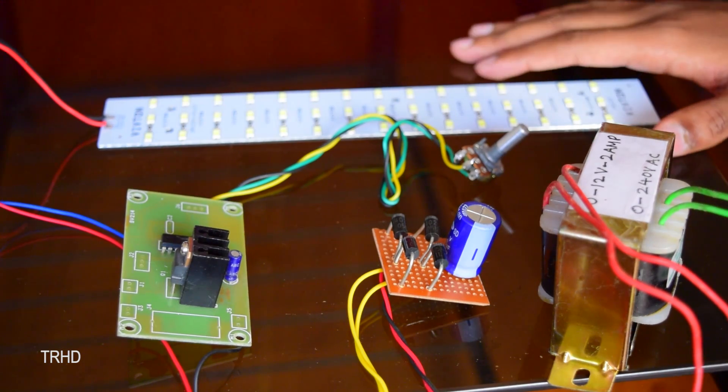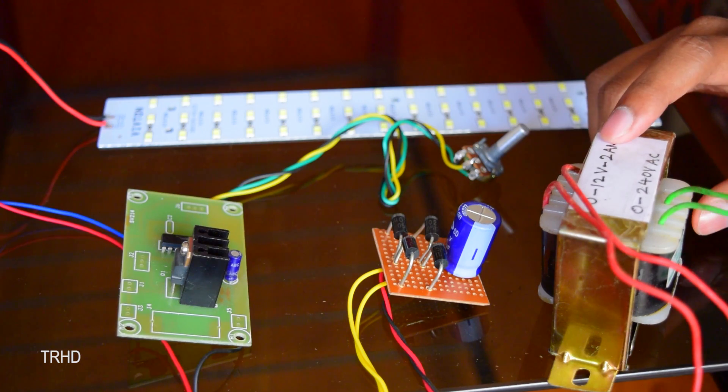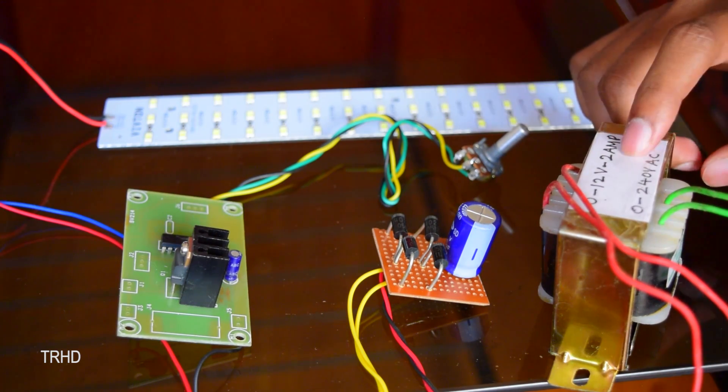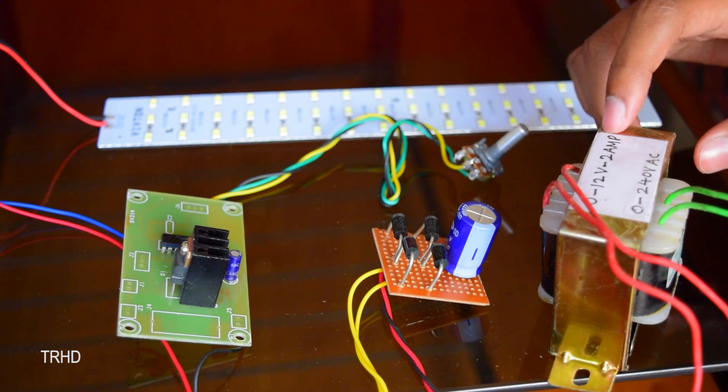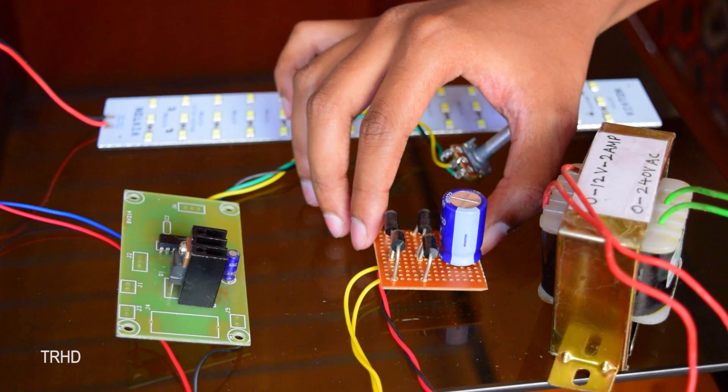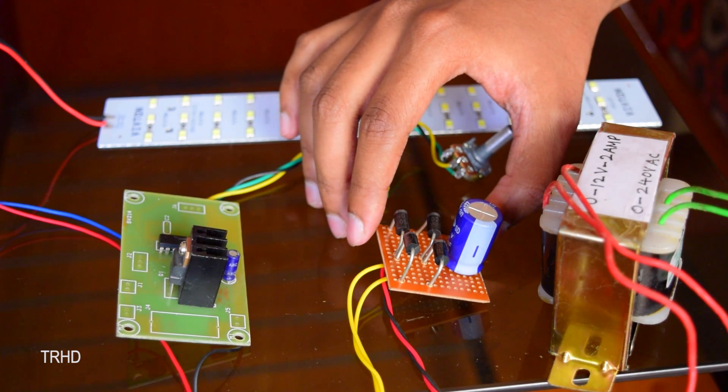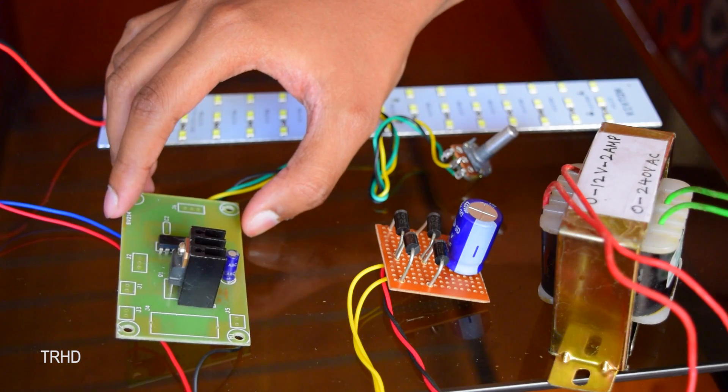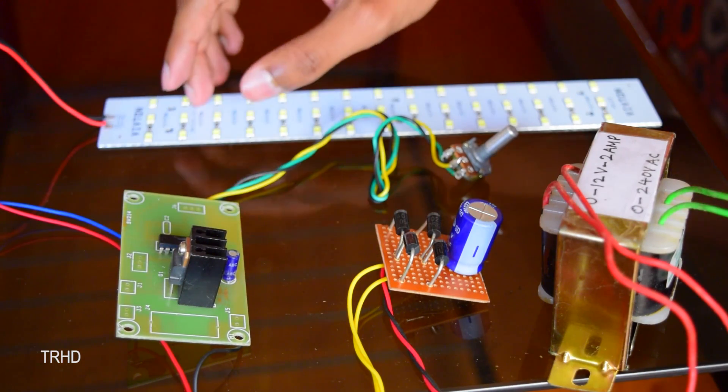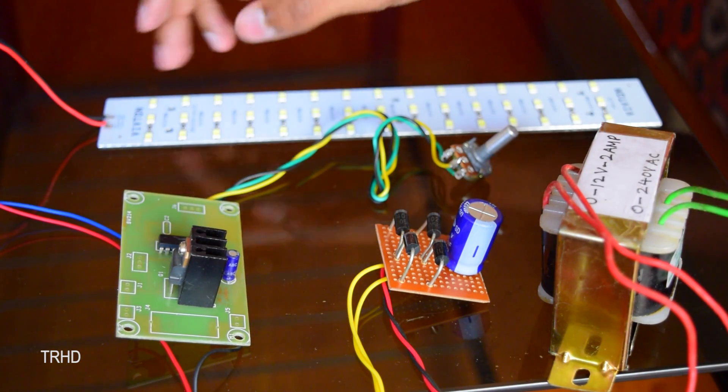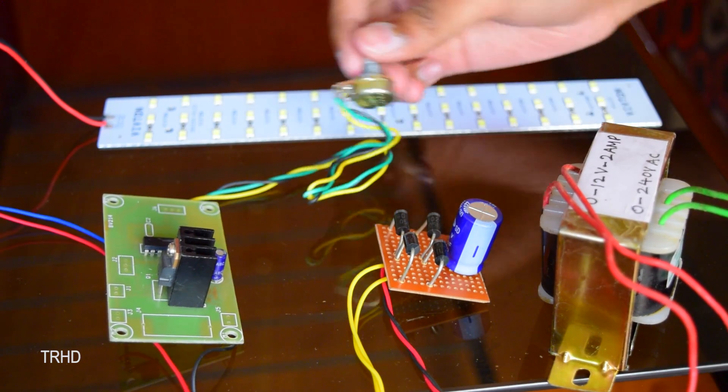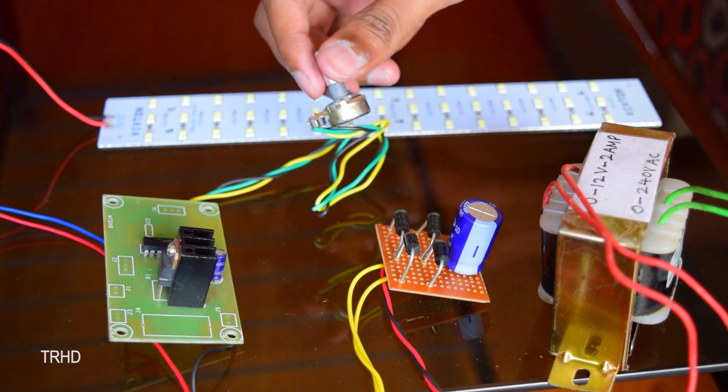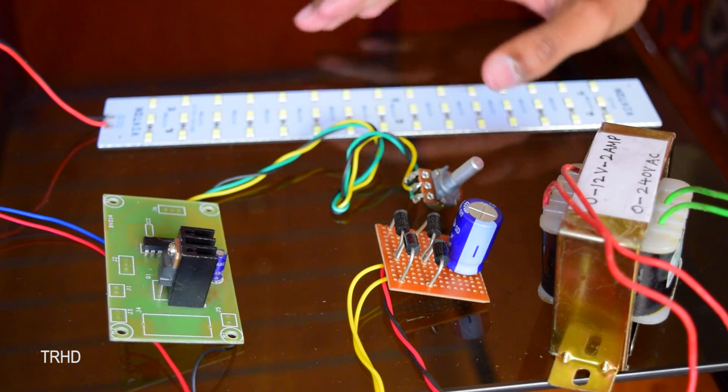I have completely assembled the project now. This is the transformer which converts the 240V AC to 12V AC, and this 12V AC is given to this bridge rectifier circuit which converts the AC to 12V DC, and this is the pulse width modulation regulator which is used to vary the brightness of the LEDs. The final output is given from there to this LED strip. This potentiometer is used to vary the brightness of the LEDs. Now let's check this circuit.